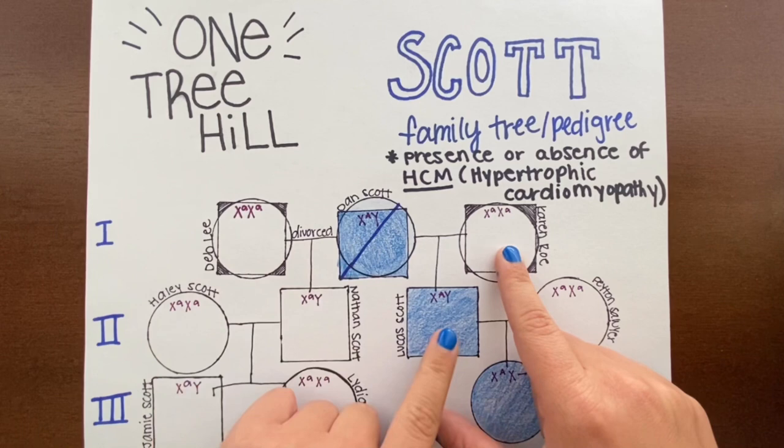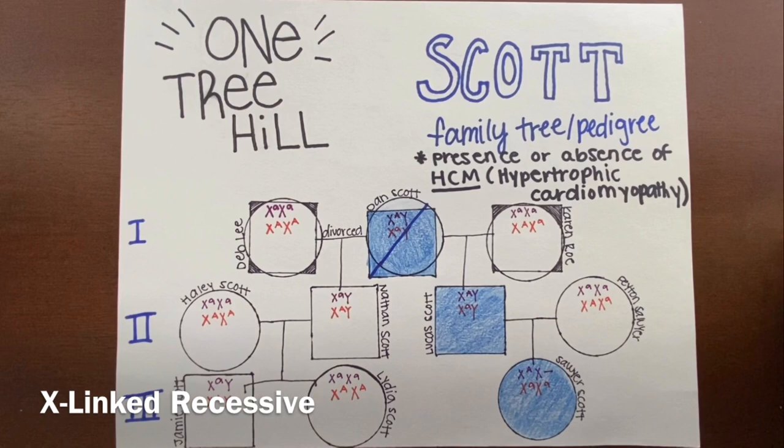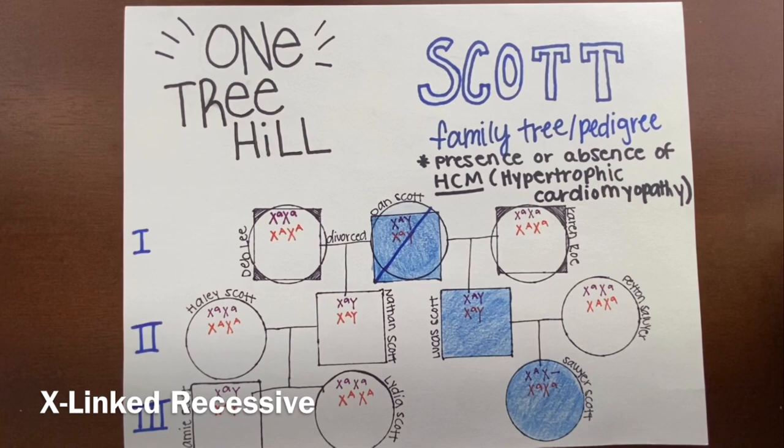Dan Scott gives the Y to Lucas, meaning that the X big A had to have come from Karen. Next, I tested the X-linked recessive mode, filling in the genotypes that I knew. All of the females who did not show the trait had to have at least one form of the big A. And the woman that came in without parents in the pedigree, I automatically gave two big A's unless otherwise told. All the males who did show the trait had X little a, Y.